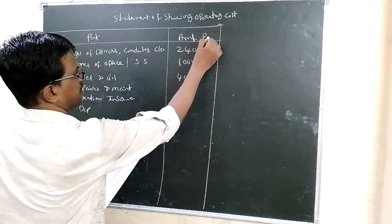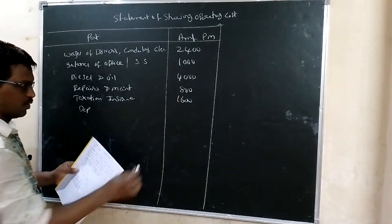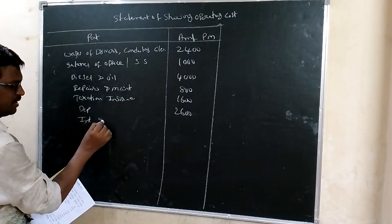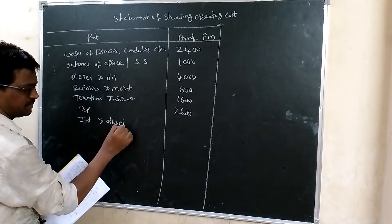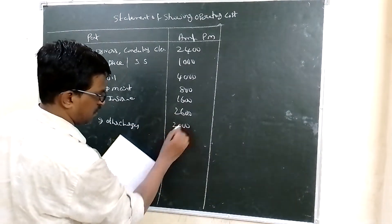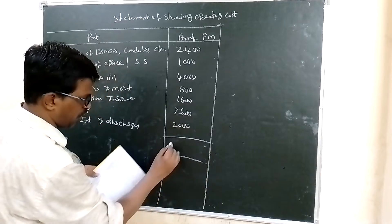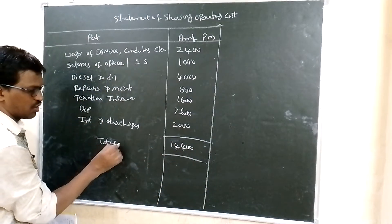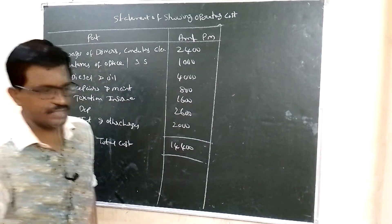Depreciation, here the expenses are given per month, 2600. Interest and other charges 2000. Total 14,400, total cost. Let us calculate the passenger kilometers.